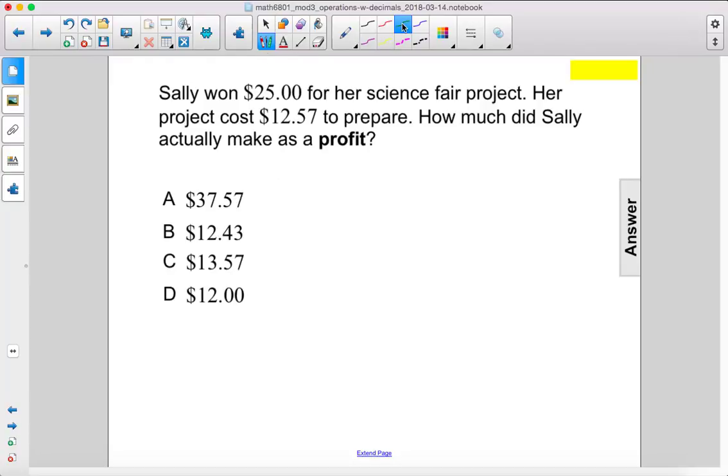Sally won $25 for her science fair project. Her project cost $12.57 to prepare. How much did Sally actually make as a profit?